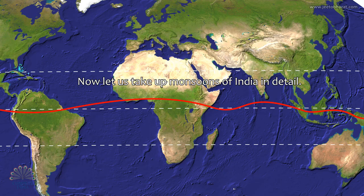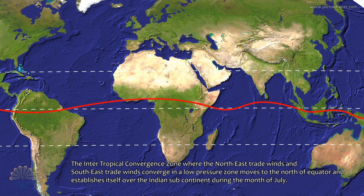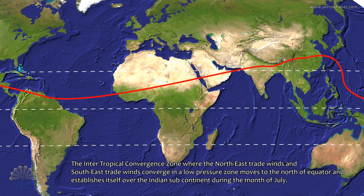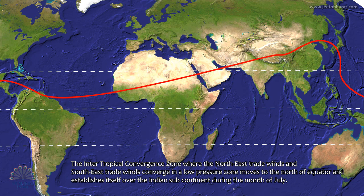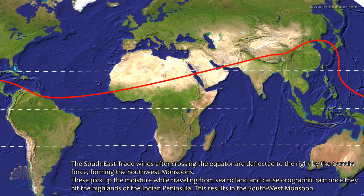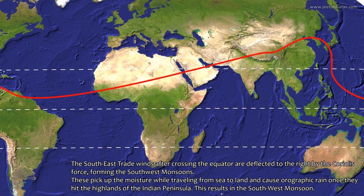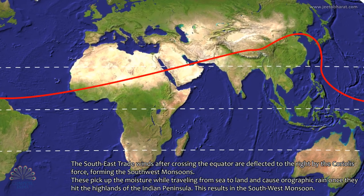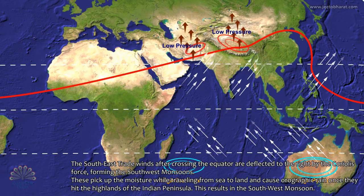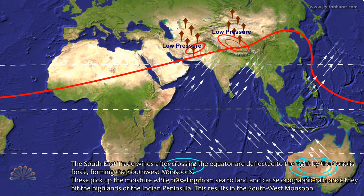Let us take up monsoons of India in detail. The intertropical convergence zone, where the Northeast trade winds and Southeast trade winds converge in a low-pressure zone, moves to the north of the Equator and establishes itself over the Indian subcontinent during the month of July. The Southeast trade winds, after crossing the equator, are deflected to the right by the Coriolis force, forming the southwest monsoons. These pick up moisture while travelling from sea to land and cause orographic rain once they hit the highlands of the Indian Peninsula.